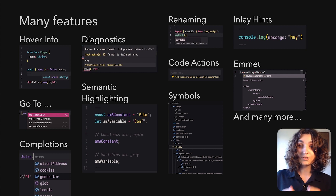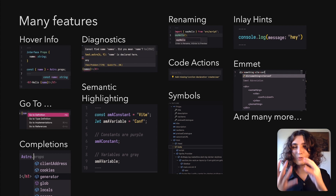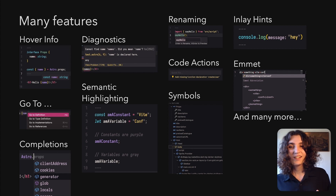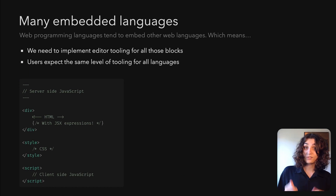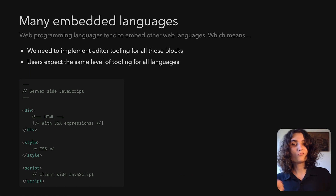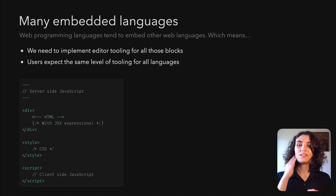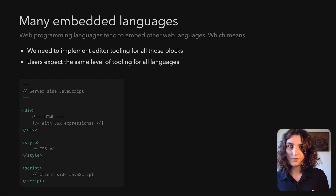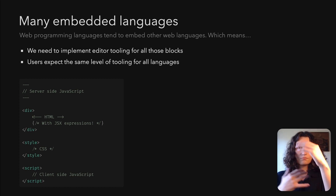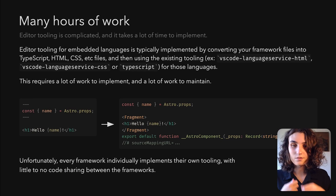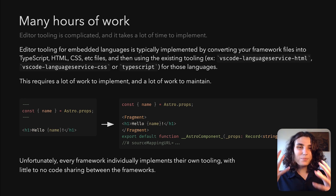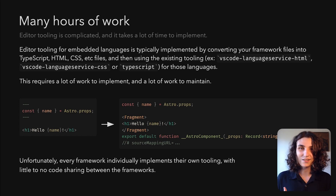There are a lot of features to support. Most users will probably be quite happy with just completions and diagnostics, but really people want everything — they will ask for everything, and they will create issues on your repo. Those languages also typically embed other languages, such as HTML templates, CSS tags, or maybe JavaScript somewhere else. In all of those blocks, users expect editor tooling to work just as great as it does in the rest of the file. It's a lot of work to implement and a lot of work to maintain, especially considering that editor tooling is ultimately a bit of a side quest while you're making your framework.